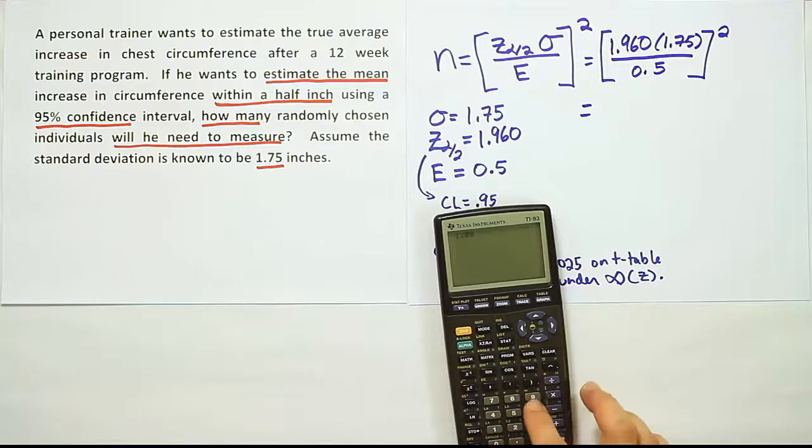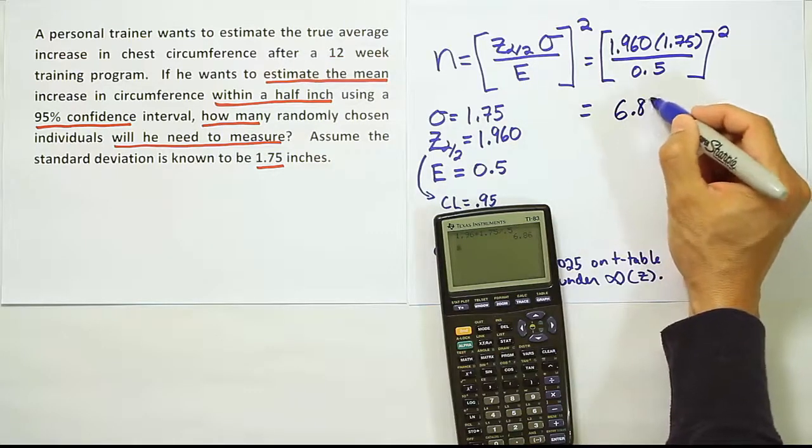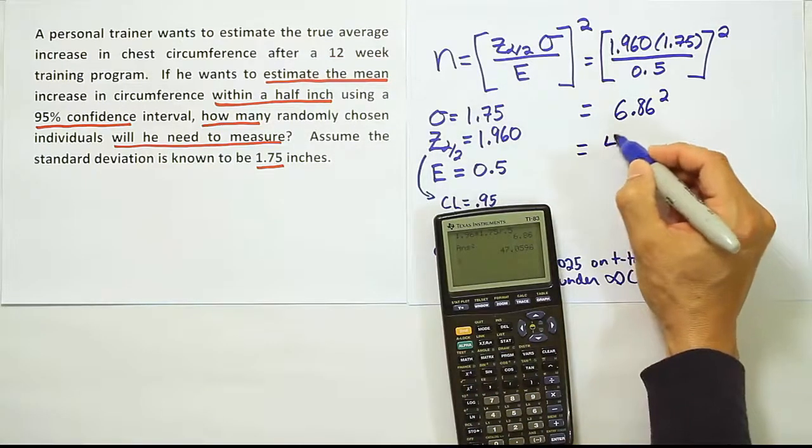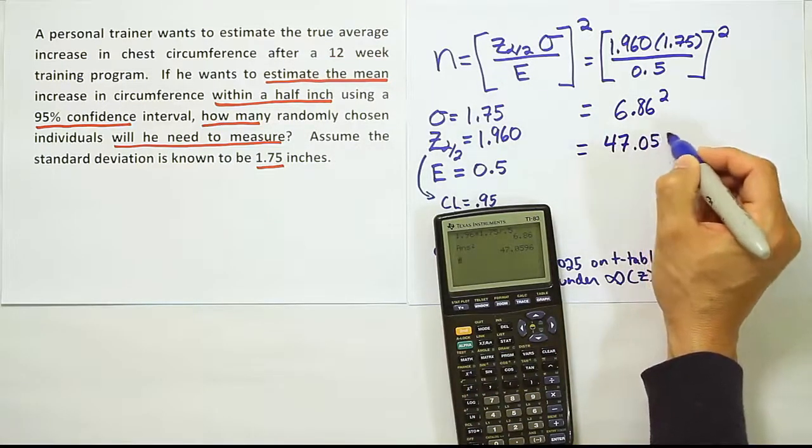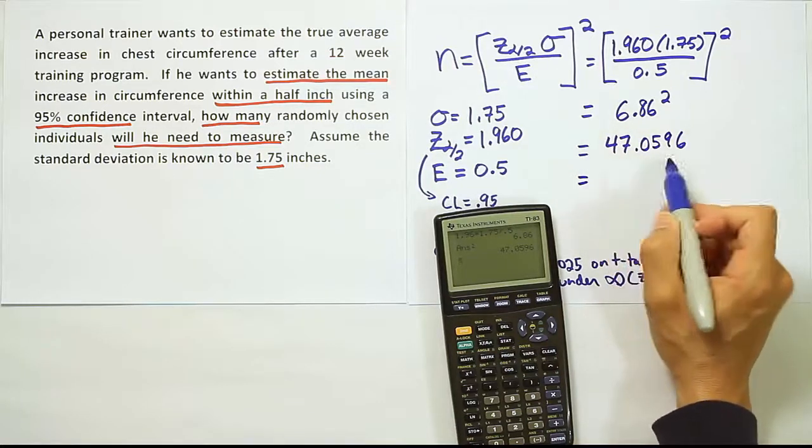Let's do the arithmetic on the calculator. We end up with 1.96 times 1.75 divided by 0.5. We get 6.86, but this is before we square. So 6.86, then we're supposed to square that, and we'll get something like 47.0596.